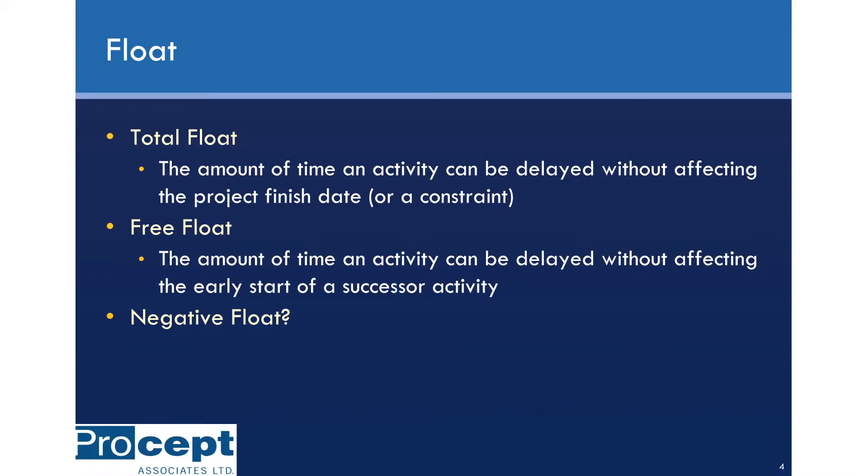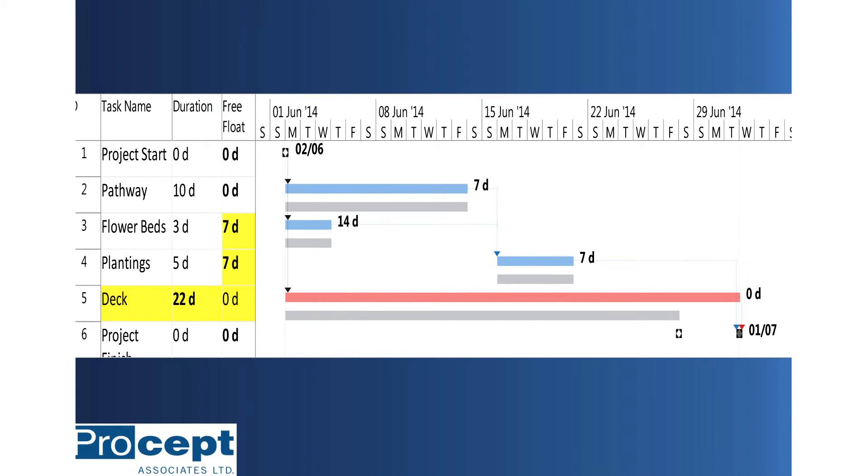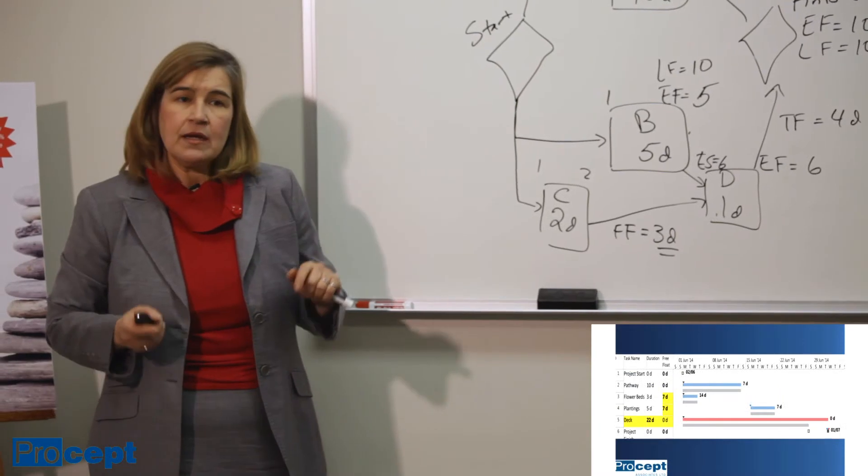Now, negative float, what does that mean? Well, let's take a look at the critical path. Deck is on the critical path. It has zero total float and zero free float. If deck is delayed, there is an immediate follow-on effect on the project finish date.